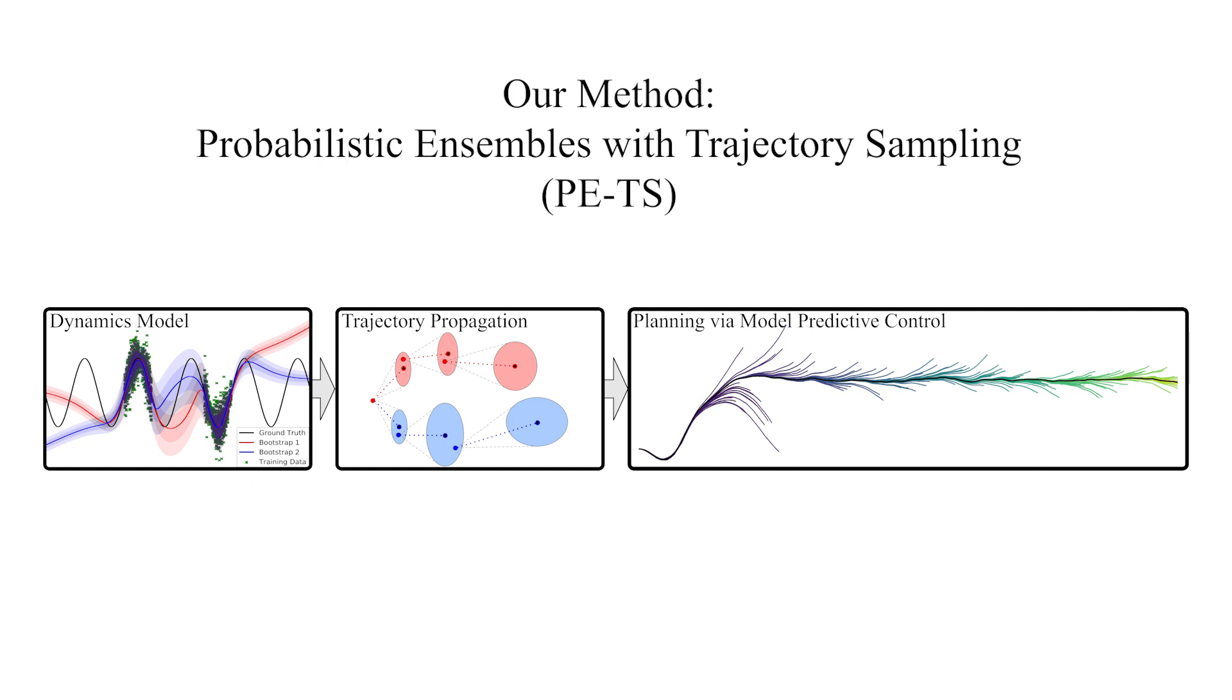Using this dynamics model, we fully propagate the state-action uncertainty to predict a distribution over trajectories. Finally, the action corresponding to the highest expected reward is selected using model predictive control.